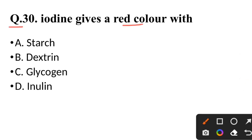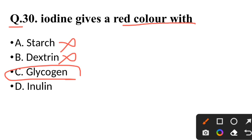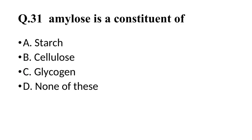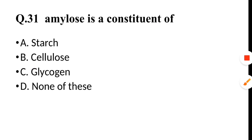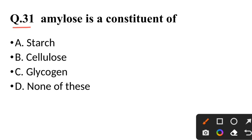Question 30: Iodine gives red color with — not starch, not dextrin — correct answer is glycogen, iodine gives a red color with glycogen. Question 31: Amylose is a constituent of — correct answer is starch.